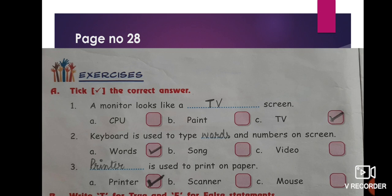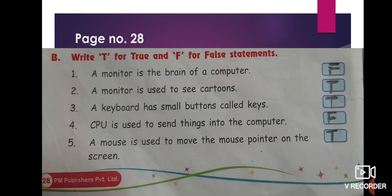Next is book exercise Part A on page number 28 — Tick the correct answer. First point: 'A monitor looks like a dash screen — CPU, paint, or TV?' The correct answer is TV. Next: 'Keyboard is used to print on a paper' — the answer is Printer.